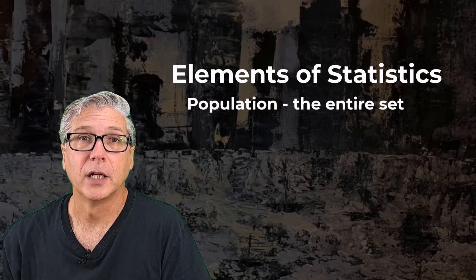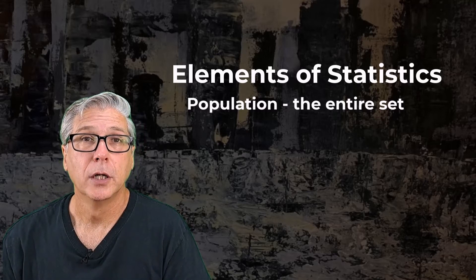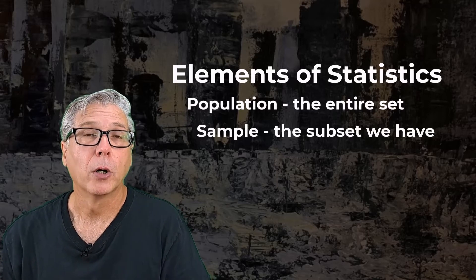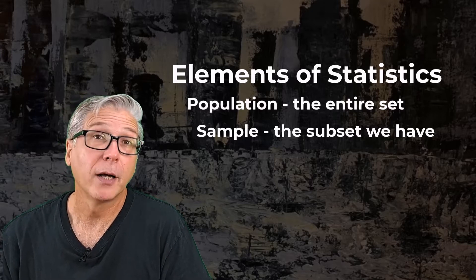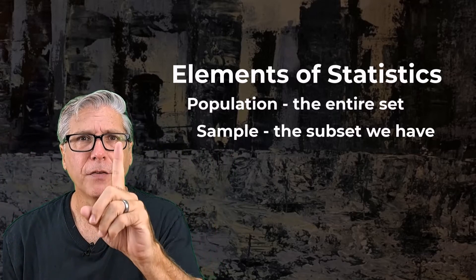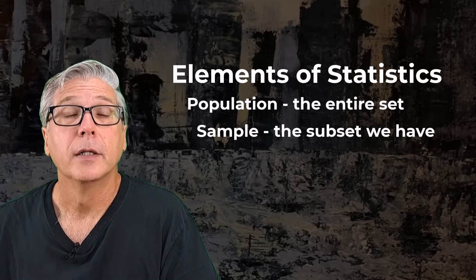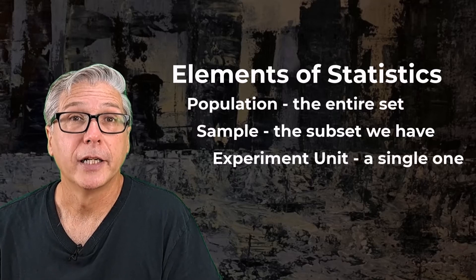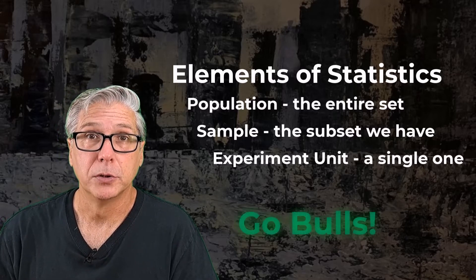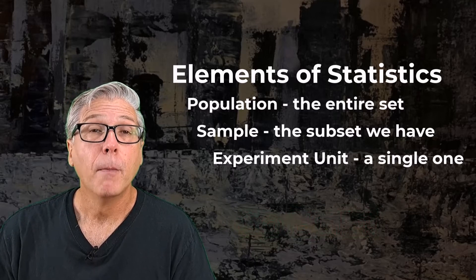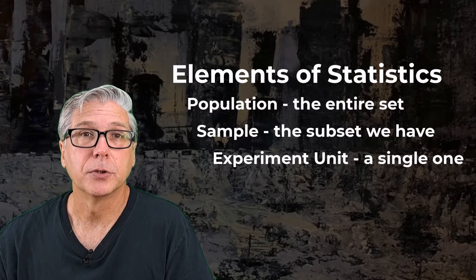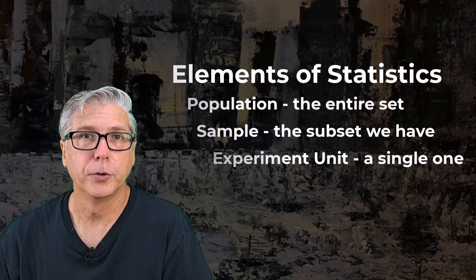We usually can't collect all that data — time and money are limiting factors. So when we can't collect all the data in the population, we take data from some of that population and we call it a sample. A sample is a subset of the population that we've actually collected information from. So if the population is the whole, the sample is some. A single piece of data is referred to as the experimental unit — the object we measure to get a single piece of data. I work at the University of South Florida, with 40,000 undergraduate students — that's a big population. Maybe I collect data for 200 of those students; that's my sample. And the experimental unit is a single student. All, some, one: population, sample, experimental unit.